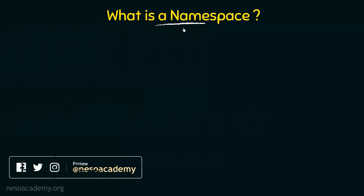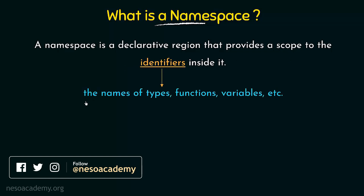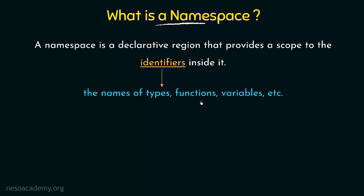The first question we have to answer is: what is actually a namespace? A namespace is a declarative region that provides a scope to the identifiers inside it. It is a region that will provide a scope to the identifiers inside that scope. Identifiers means they can be the names of types, functions, or variables, etc. For these kinds of identifiers, the namespace is a declarative region that provides their scope.